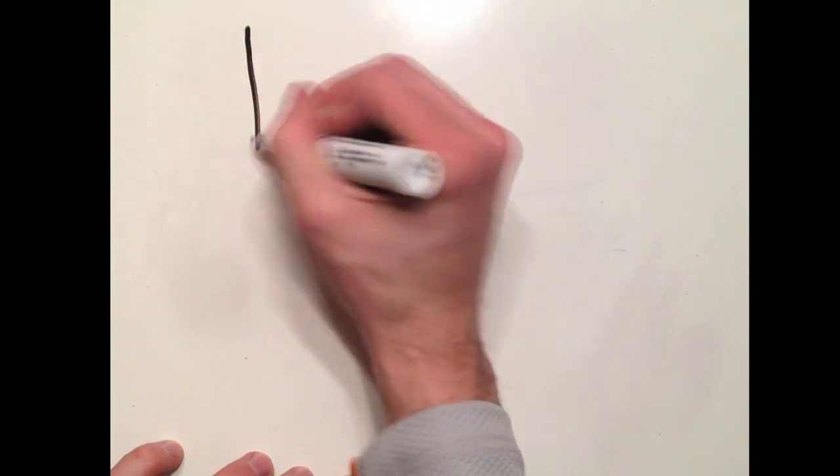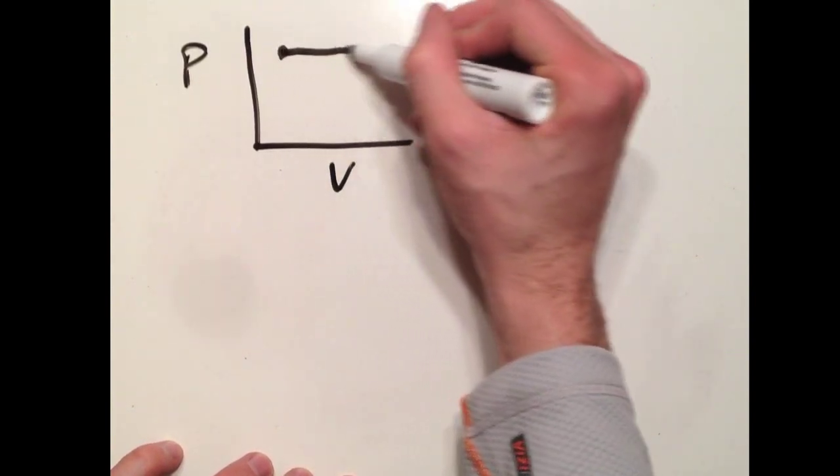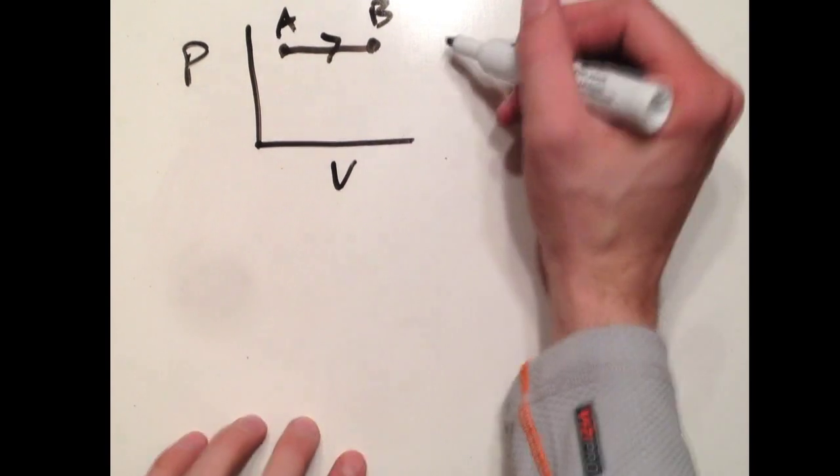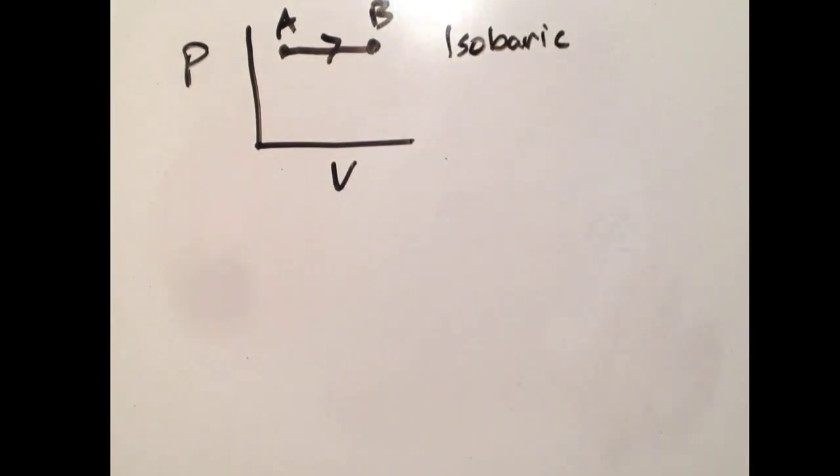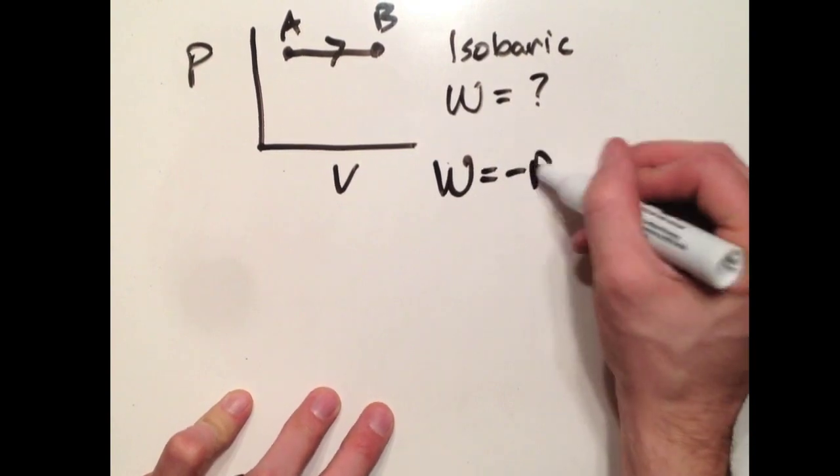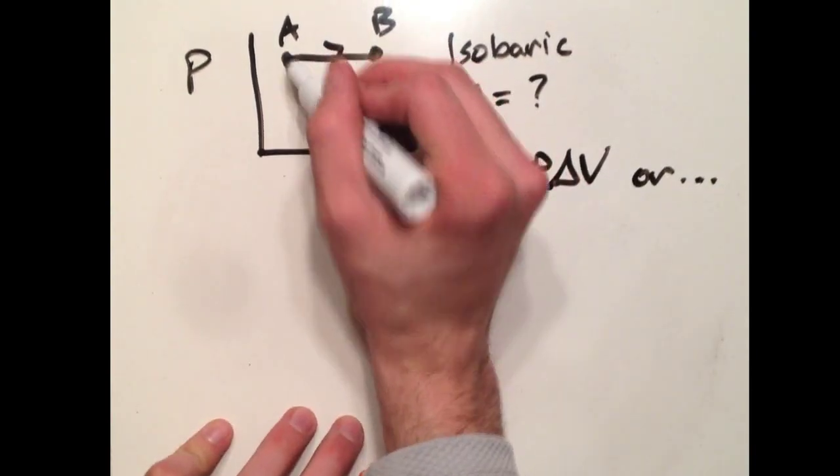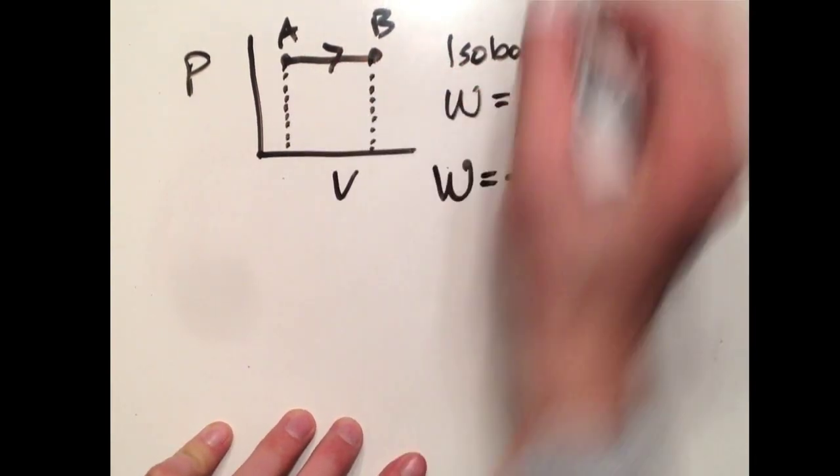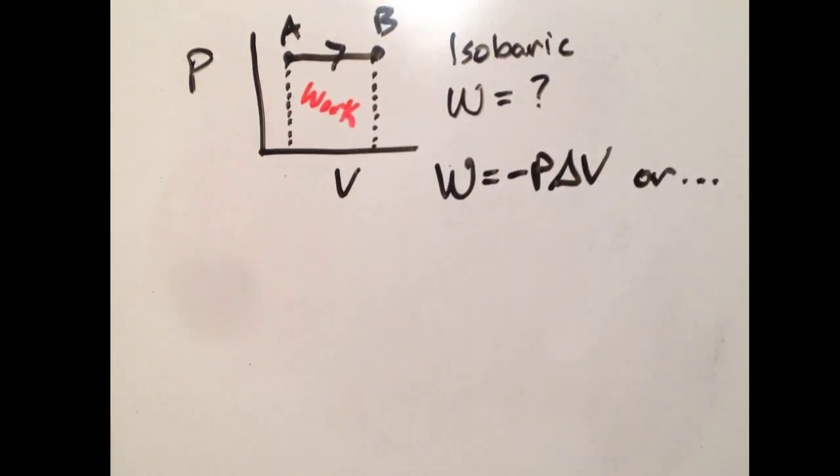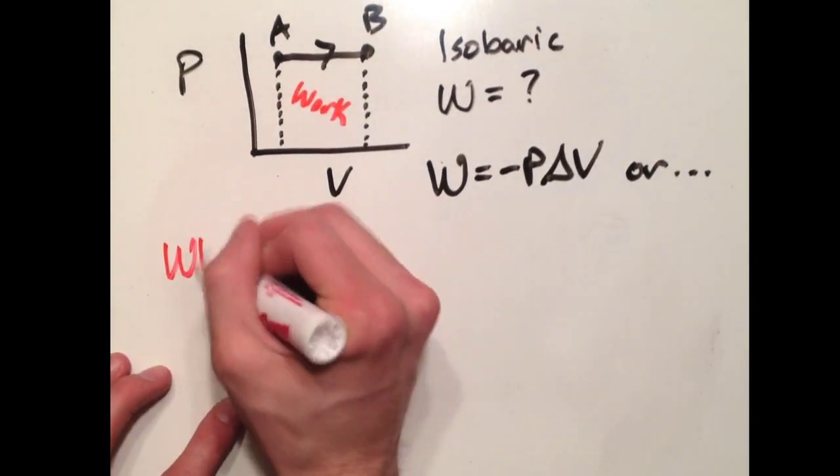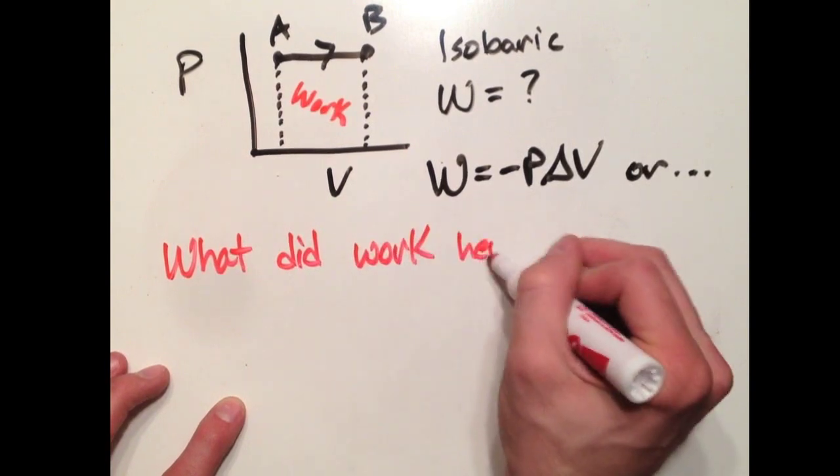Let's look at an isobaric process on a PV diagram. Let's say I'm going from A to B isobarically, so my pressure is held constant and my volume is going to increase. Work done by the surroundings is negative P delta V. You can also figure this out by the area under the curve.